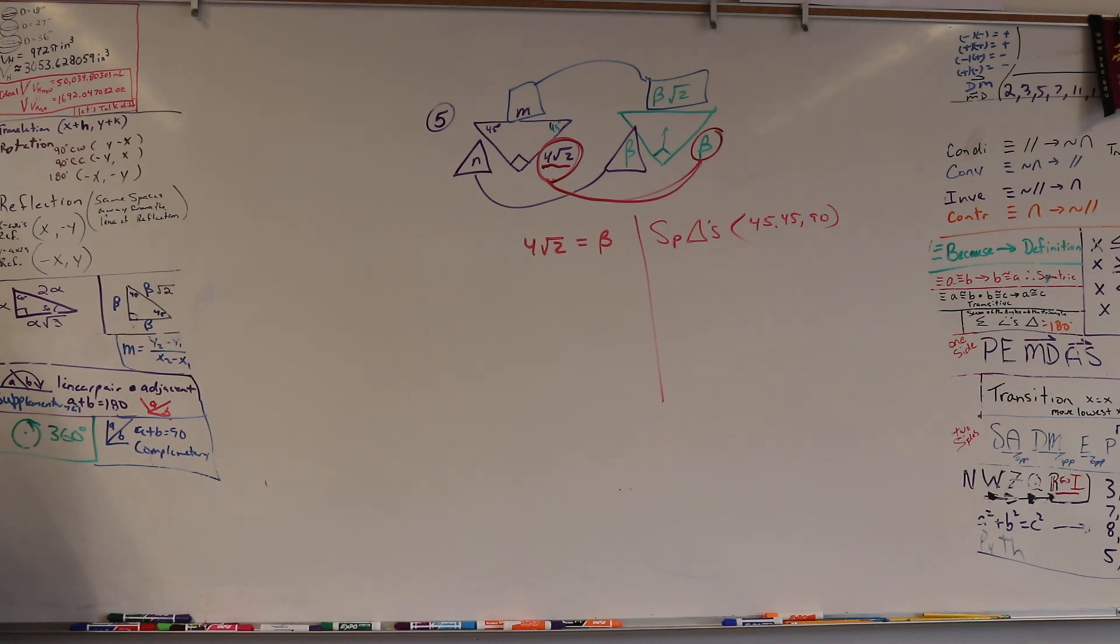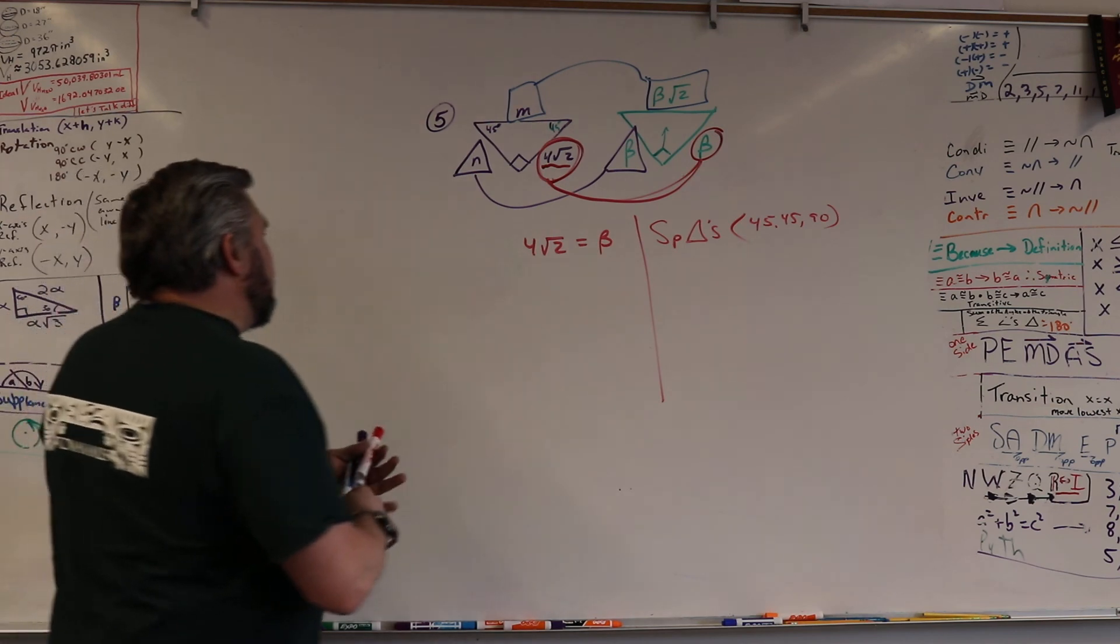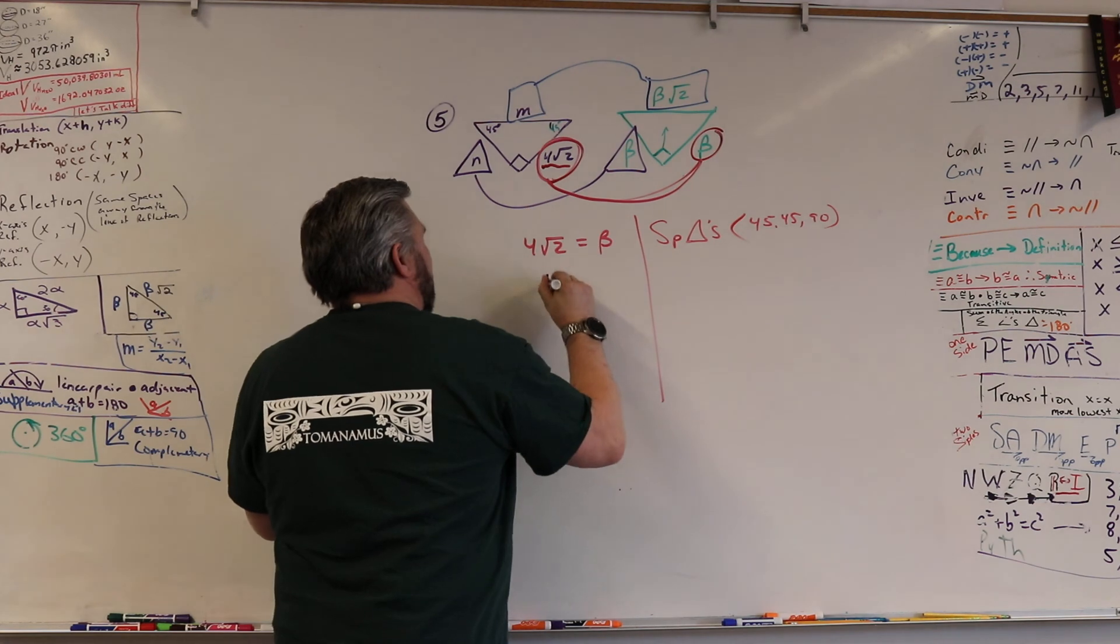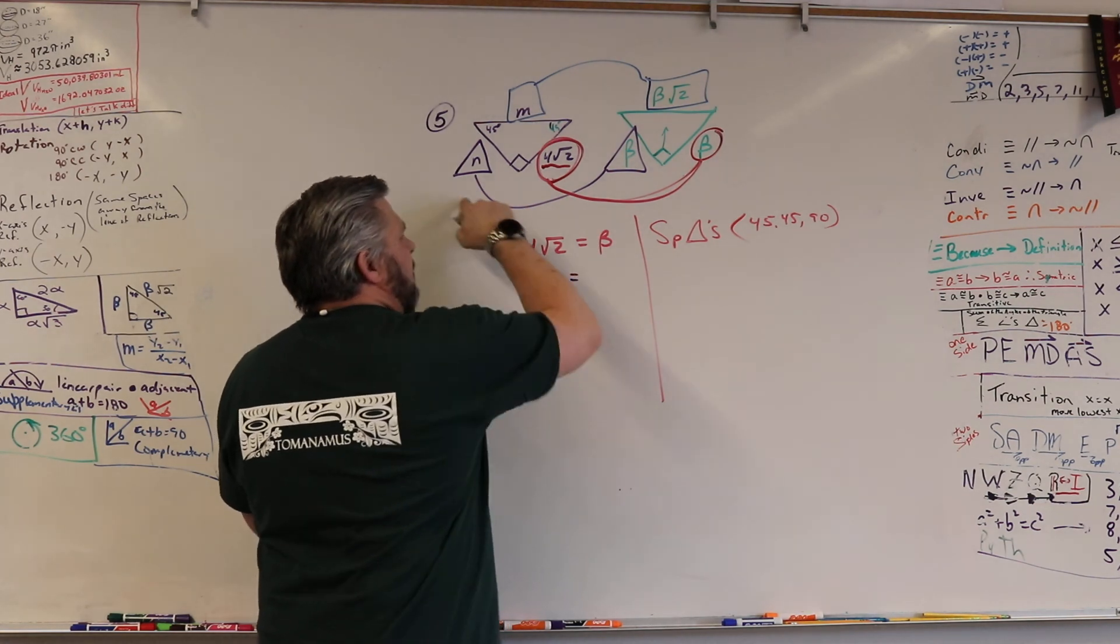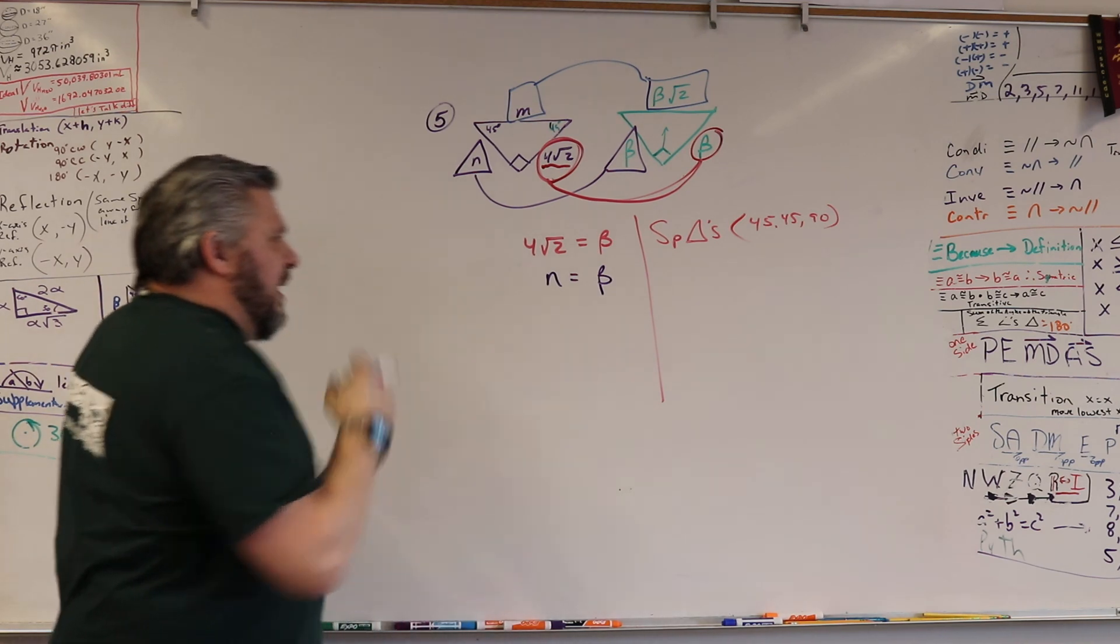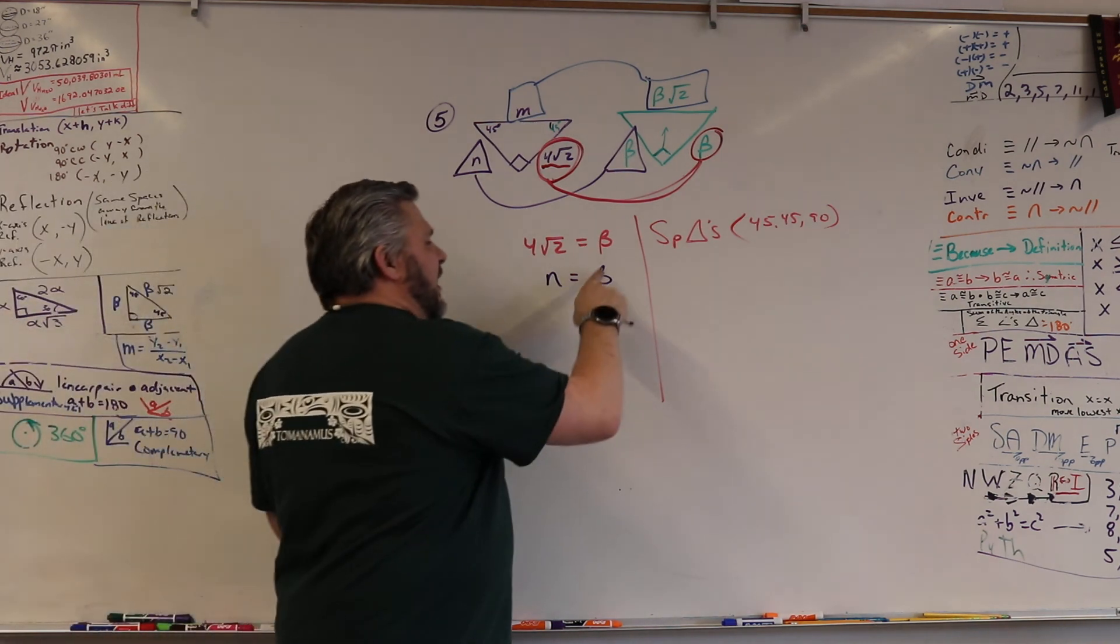Now once I do that, then I can choose N or M. It's up to you guys. Which one do you want? N? Okay. So the cool thing about N is that N is equal to what? Beta. Good. Now I may have wanted to write that the other way. Why would I want to write that as beta equals N instead of N equals beta? Are you solving for N? Yeah, I'm solving for N.